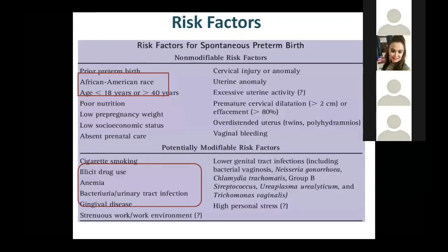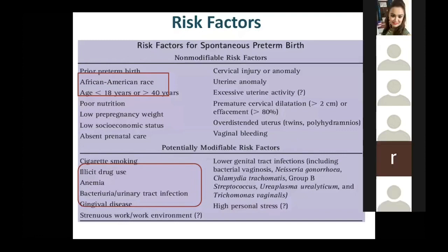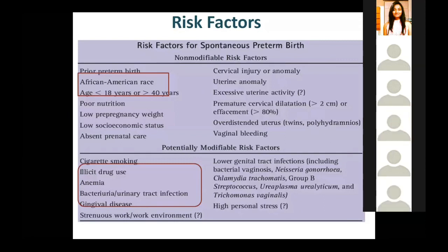Risk factors include early age — teenage pregnancy — or elderly age group above 40 years, poor nutrition, and low interpregnancy interval. Importantly, bacterial vaginosis, urinary tract infections, anemia, and gingival disease all play an important role.